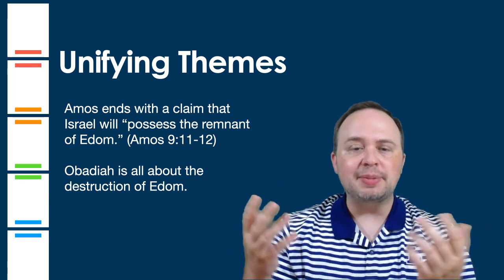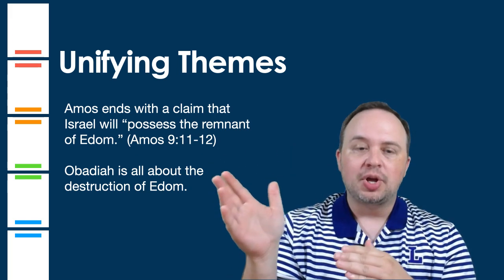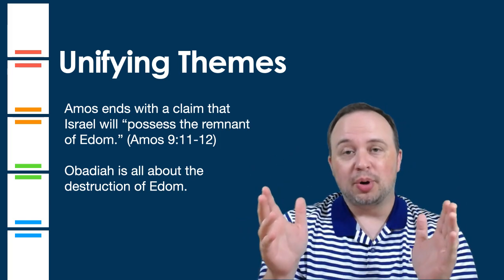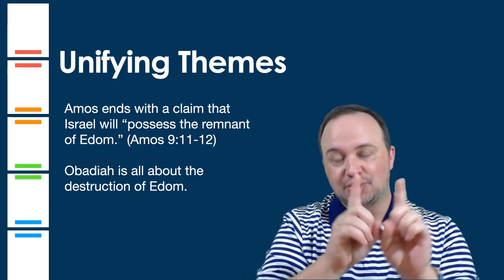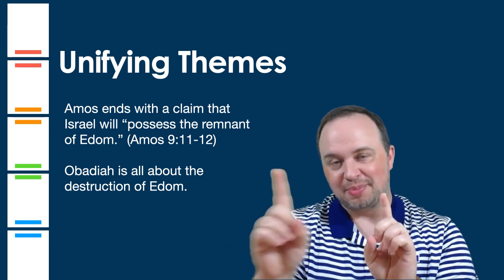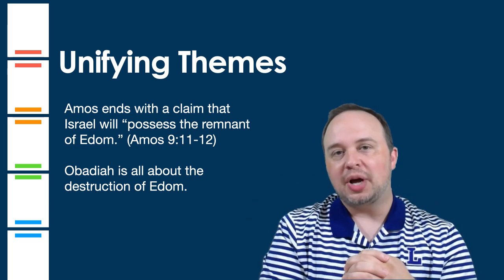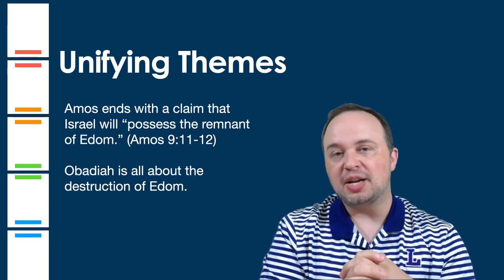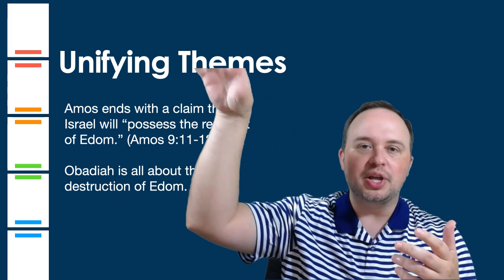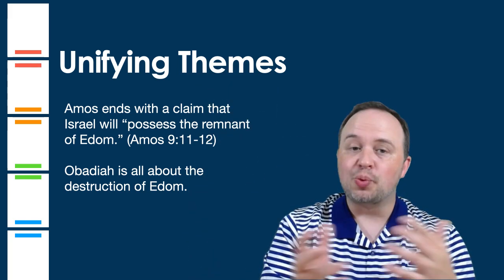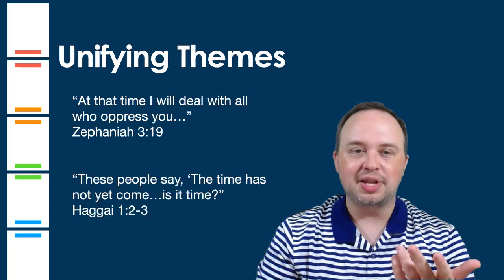Amos ends with a claim that Israel will possess the remnant of Edom — so the very end of Amos has a harsh word for Edom. The book of Obadiah is a short book but is entirely about Edom. The Edomites are descendants of Esau, so Israel comes from Jacob and Edom comes from Esau — they're distant cousins. The Edomites were laughing and mocking while the Israelites were being torn apart. God has a word for the Edomites, and Obadiah immediately picks up on that theme following the end of Amos.